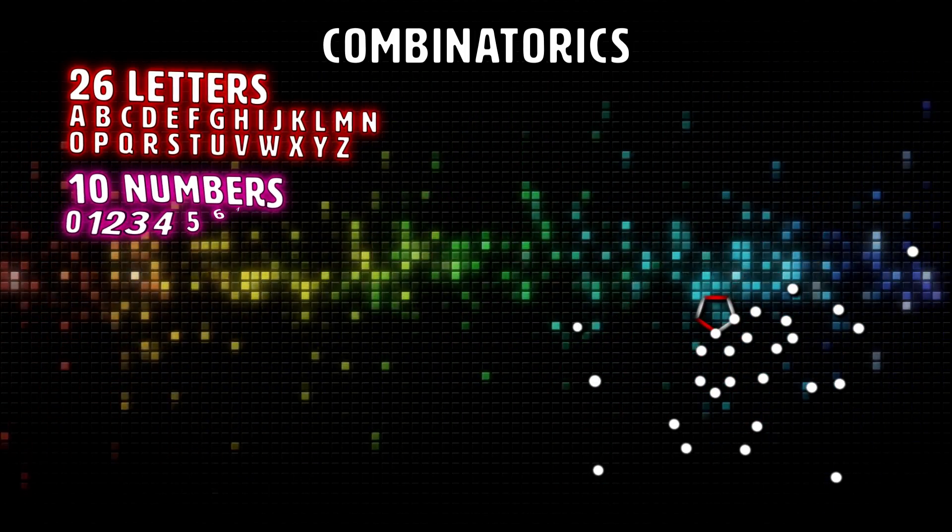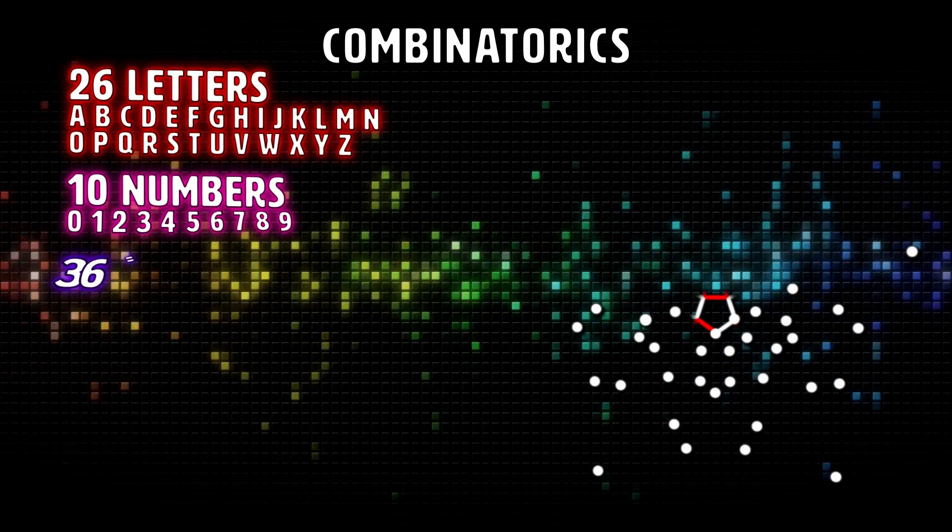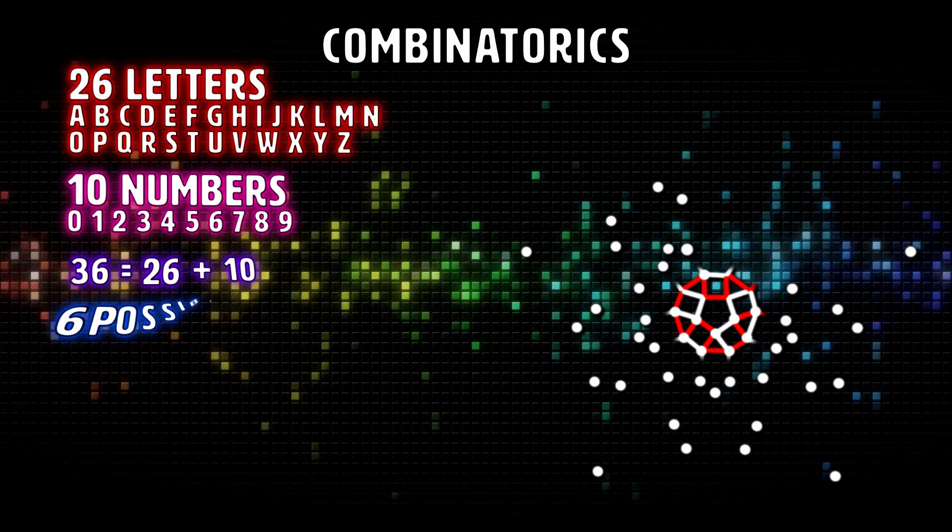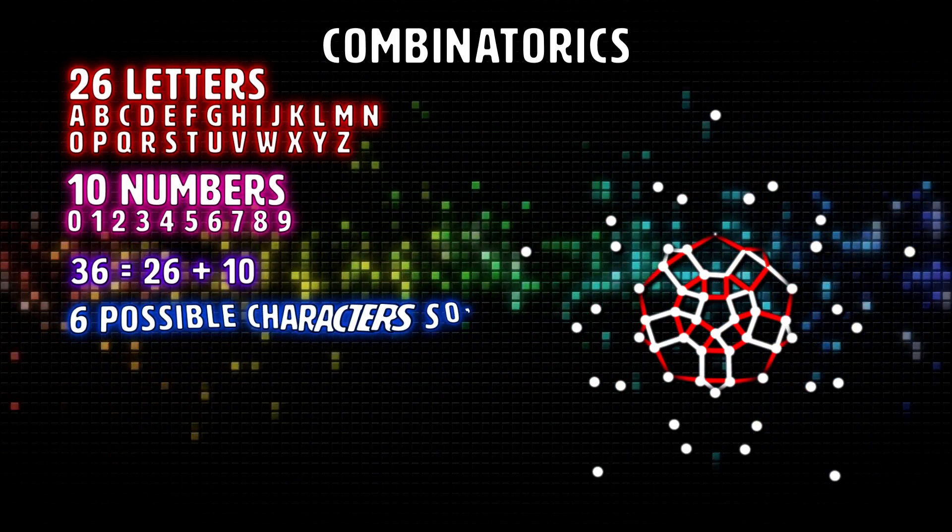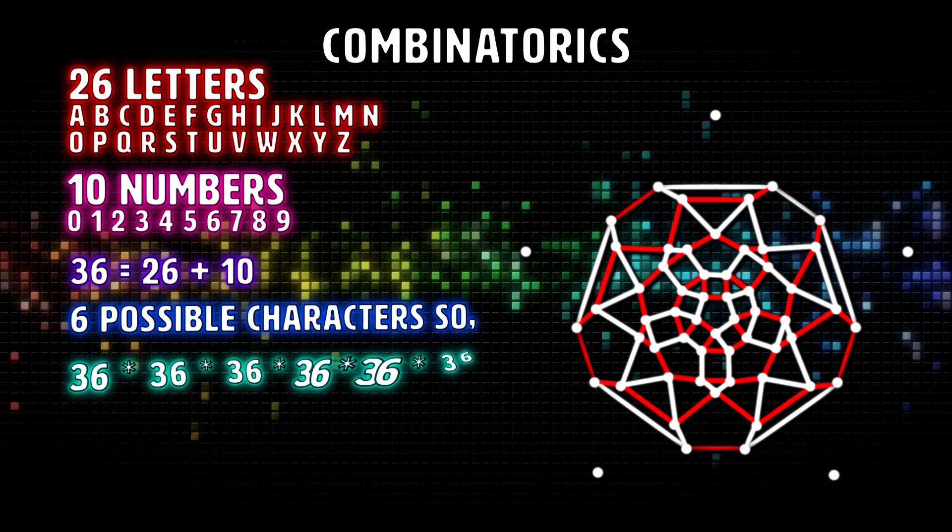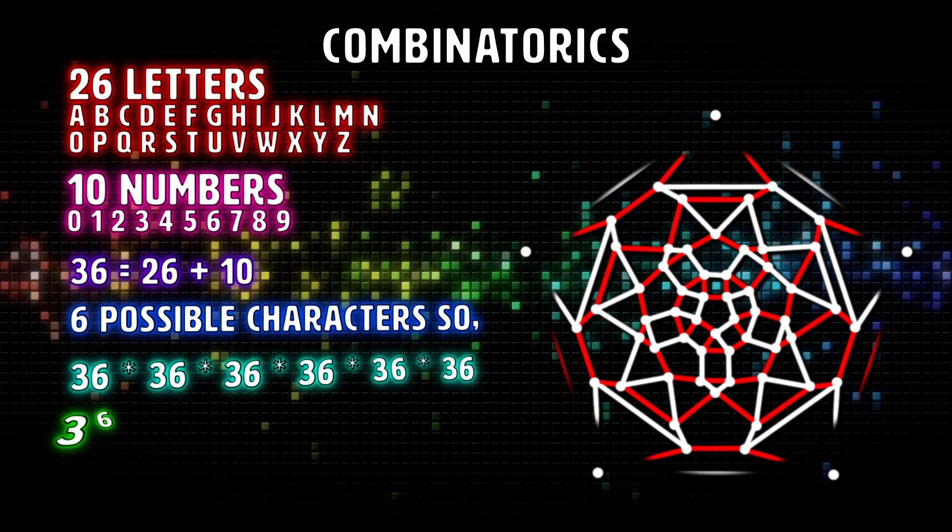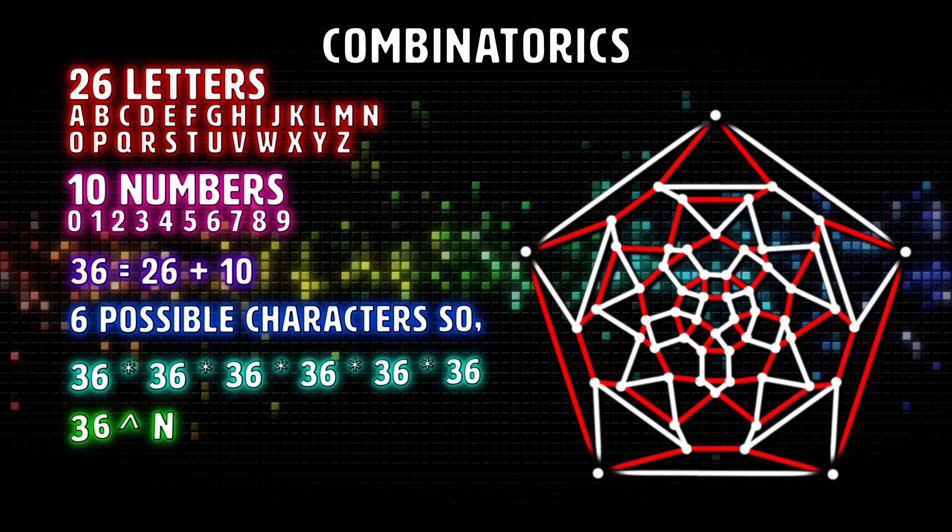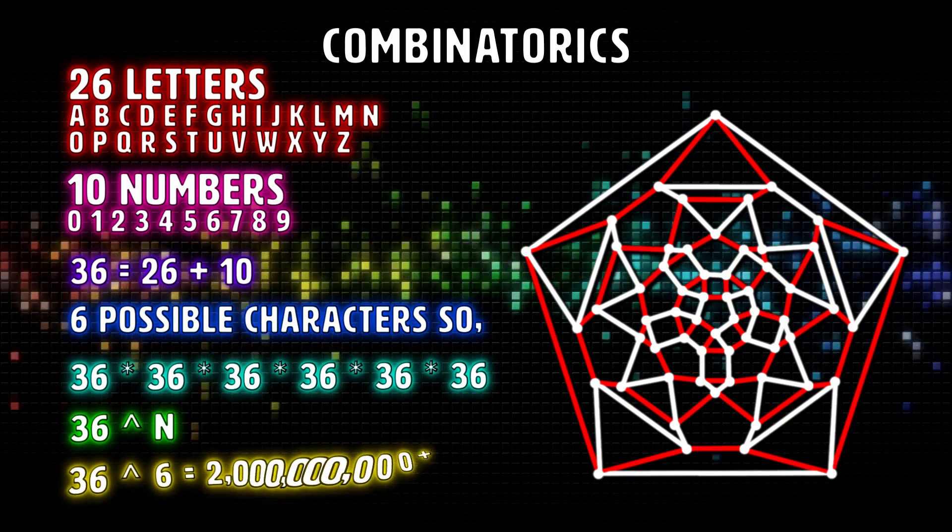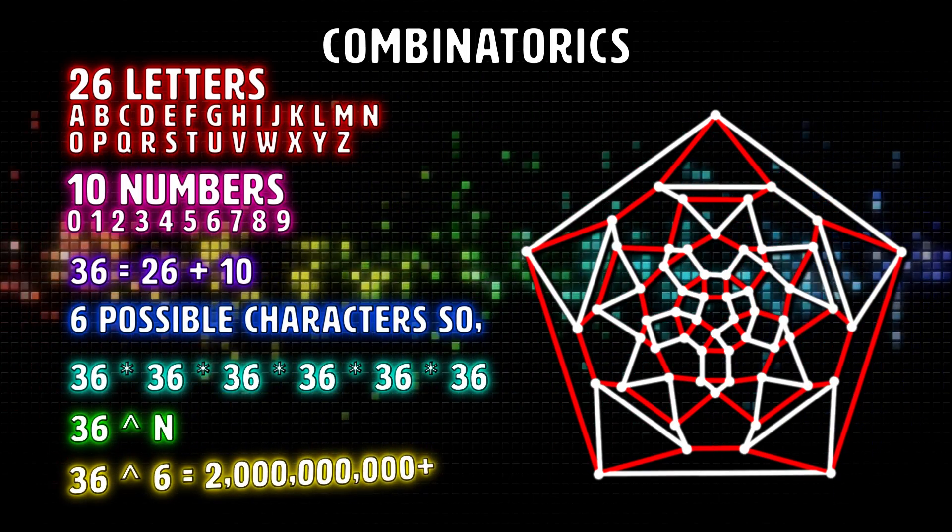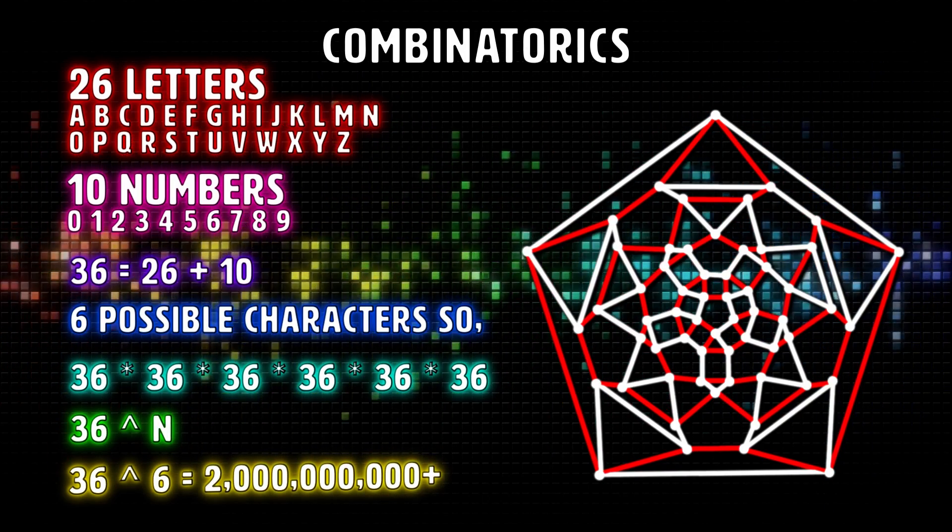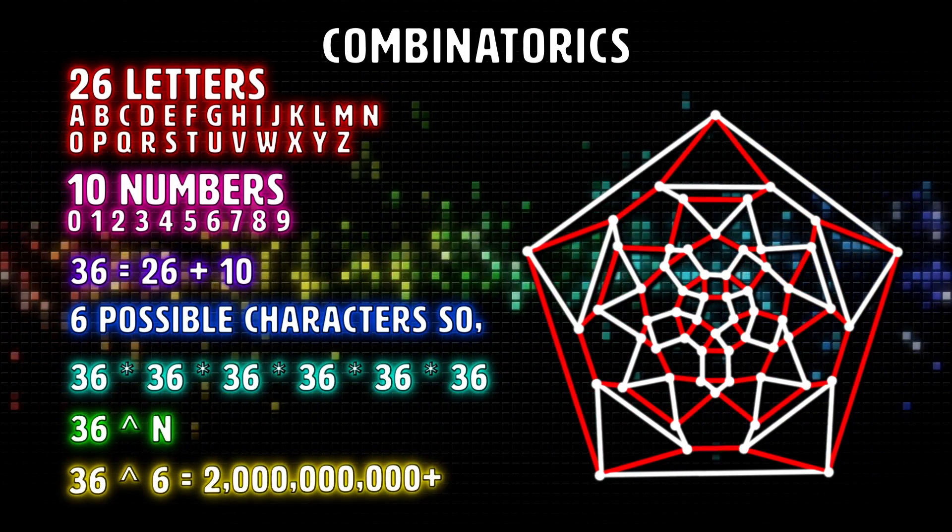If we start from the left, we can fill in the first position 36 possible ways. For each of the 36 possibilities for the first character, there are 36 possibilities for the second character. That means there are 36 squared ways to fill in the first 2 characters. For each of the 36 squared ways to fill in the first 2 characters, there are an additional 36 ways to fill in the third character. So there are 36 cubed ways to fill in the first 3 characters. Notice the pattern here? and no the number 69 is not involved here. The total number of possible combinations is 36 to the n, where n is the length of the character field, which is six in our case, making it over two billion possible combinations.